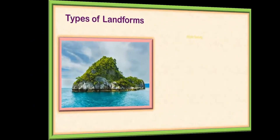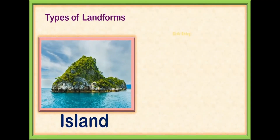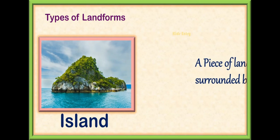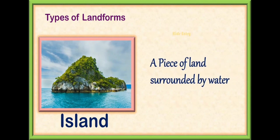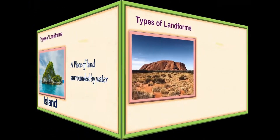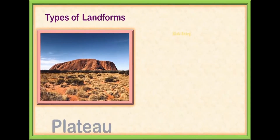The next one is island. An island is a piece of land surrounded by water — it means that on all four sides there is water, and the landform is in the middle.